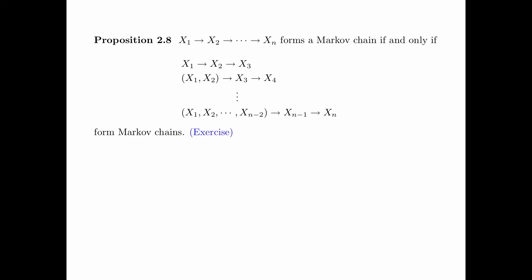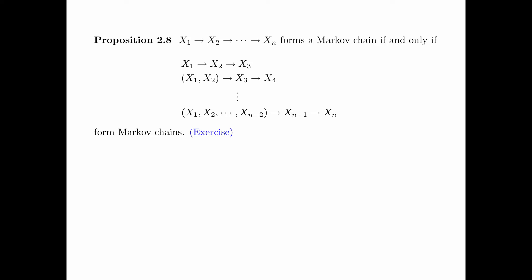Proposition 2.8 says that x1, x2, ..., xn forms a Markov chain if and only if the following sequence of Markov chains holds: first, the Markov chain x1, x2, x3; then the Markov chain (x1, x2) and x3 and x4; all the way to the last Markov chain (x1, x2, ..., xn−2), then xn−1, then xn. The proof of this proposition is left as an exercise.